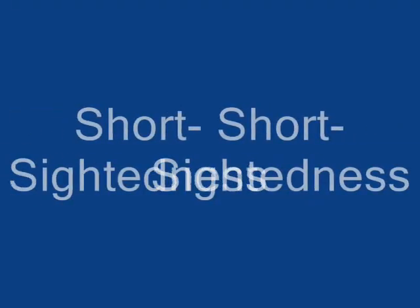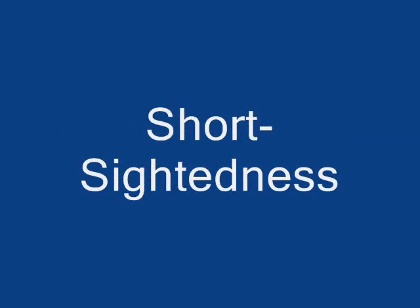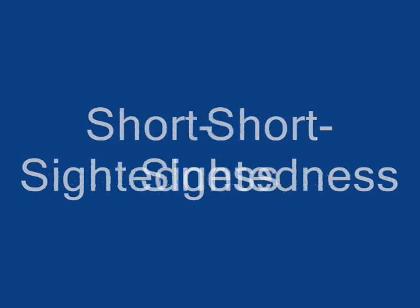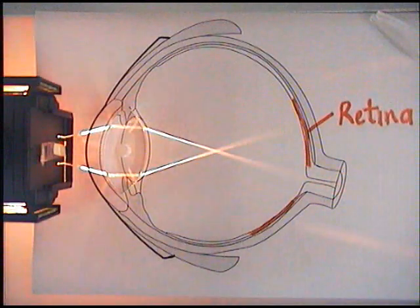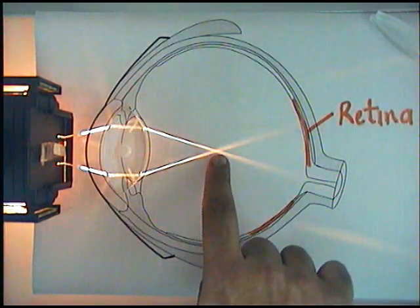People who are short sighted see nearby objects clearly but distant objects appear blurred. The following video explains why. The lens on a short sighted person does not work correctly and the light is focused before the retina.